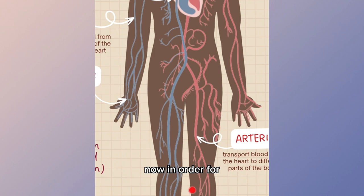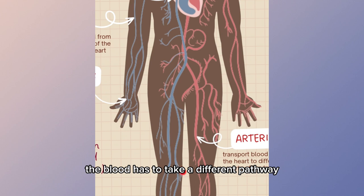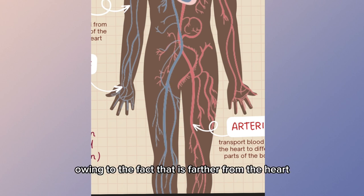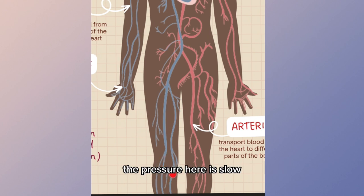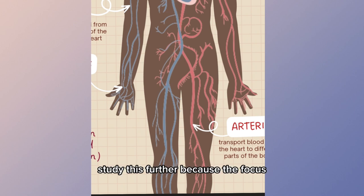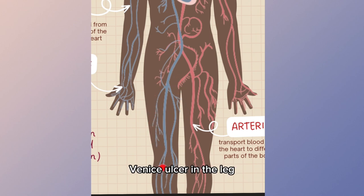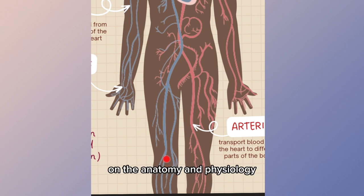In order for blood to go back to the heart, it has to take a different pathway through different vessels called veins. The veins, owing to the fact that they are farther from the heart, operate under low pressure. The focus of this video is to explain how dysfunction of the veins results in a chronic venous ulcer in the leg.